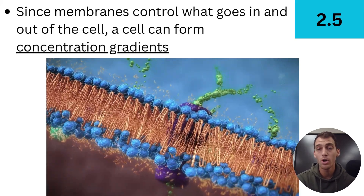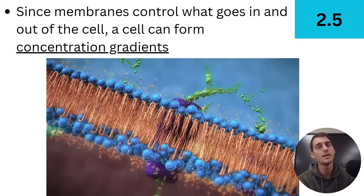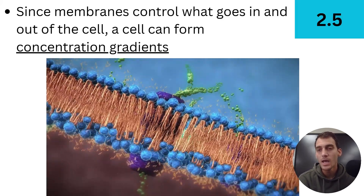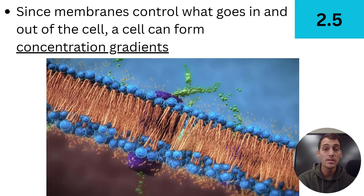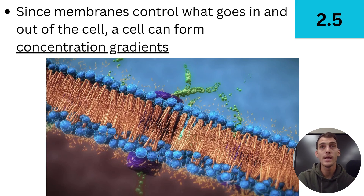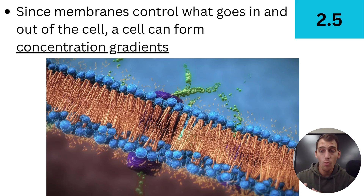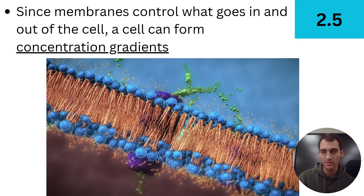If you've taken a chemistry class you probably know what concentration is, but here's a reminder: concentration is the amount of something in a given unit of space. If I put 50 grams of sugar into a 12-ounce can versus 20 grams of sugar, the can with 50 grams — even with the same amount of water — has a greater concentration of sugar. It's the amount of something per unit of space.